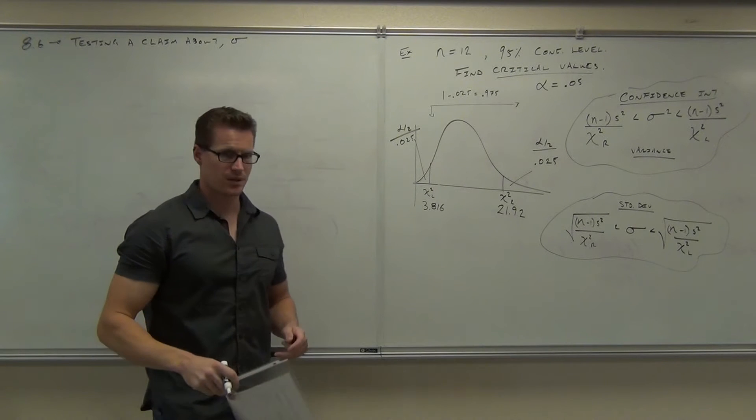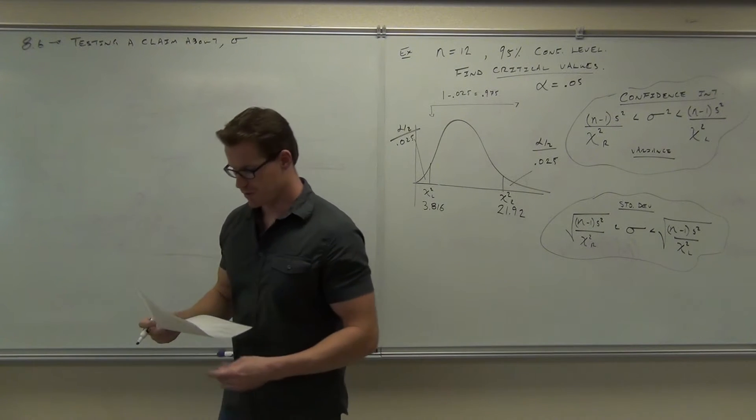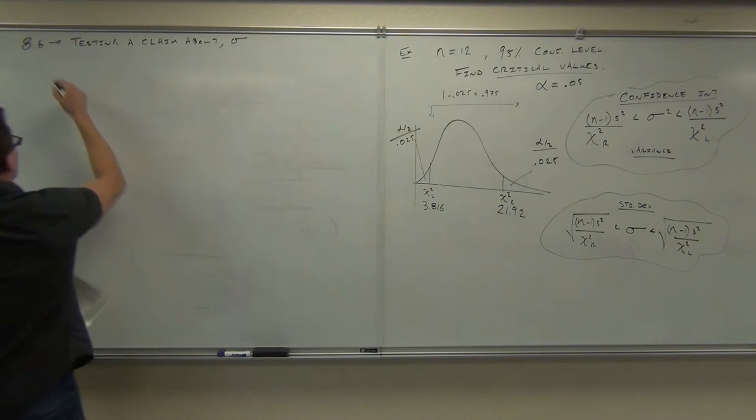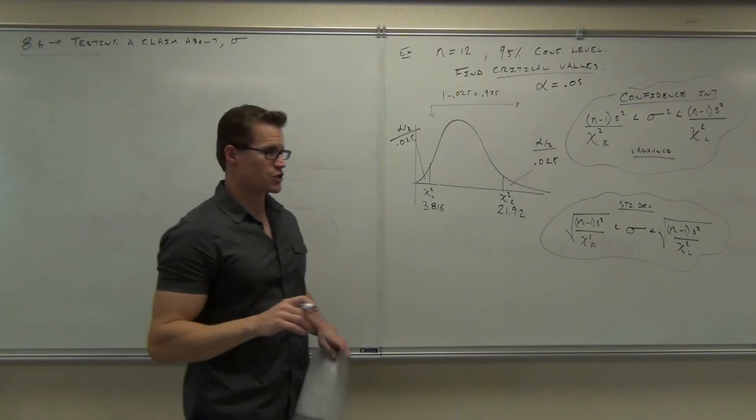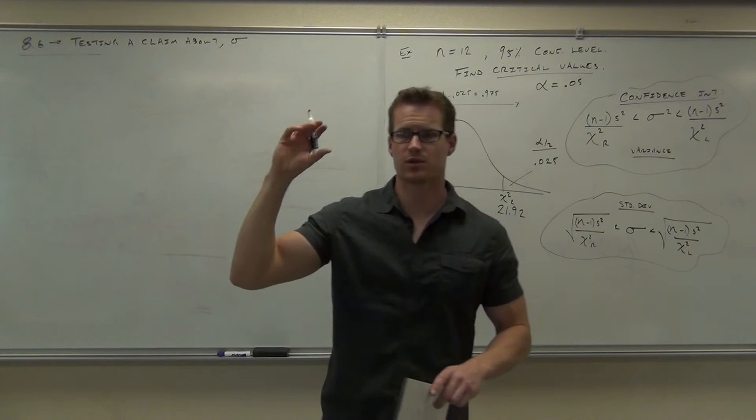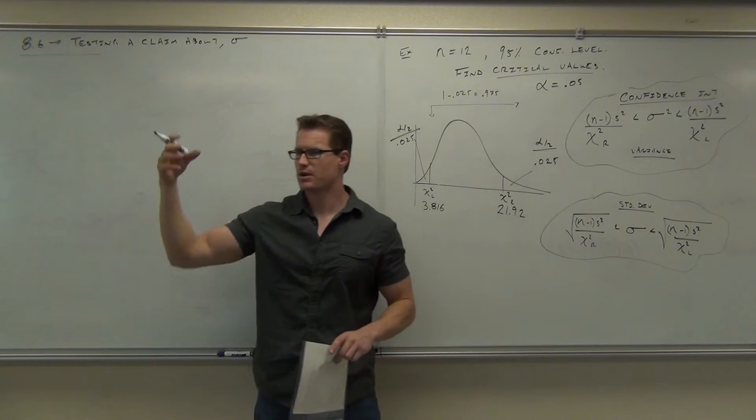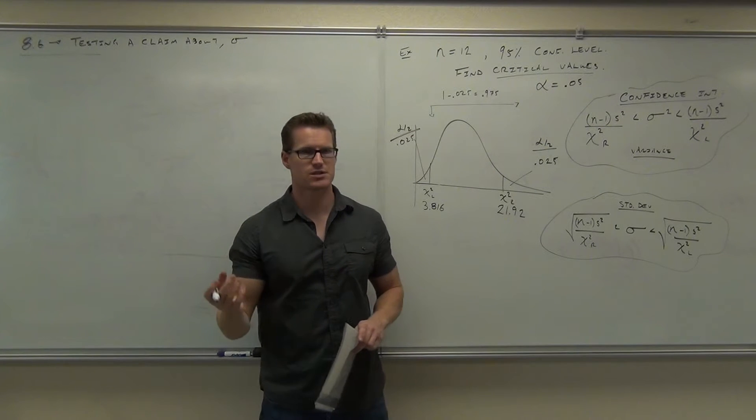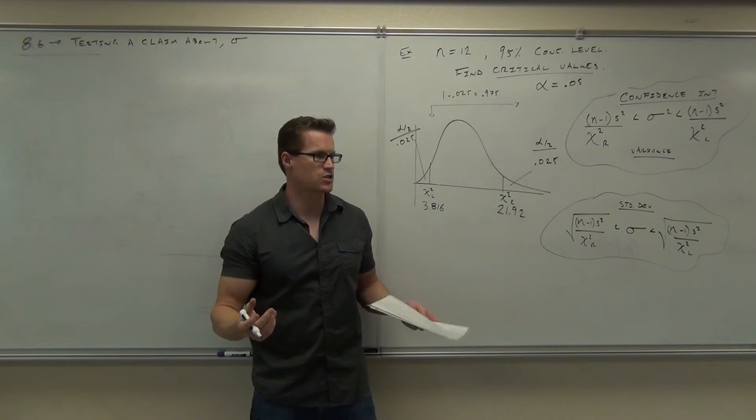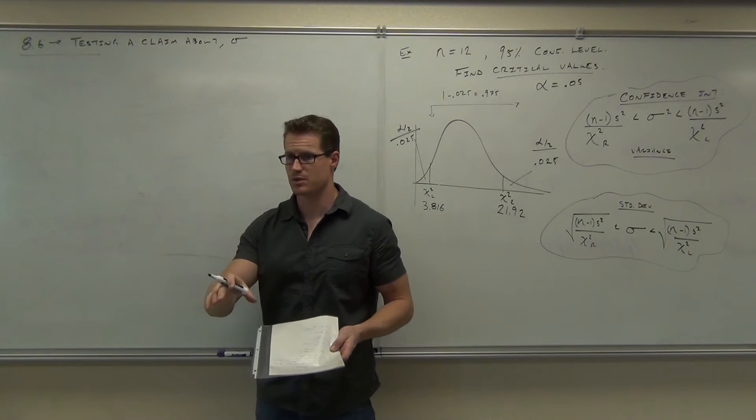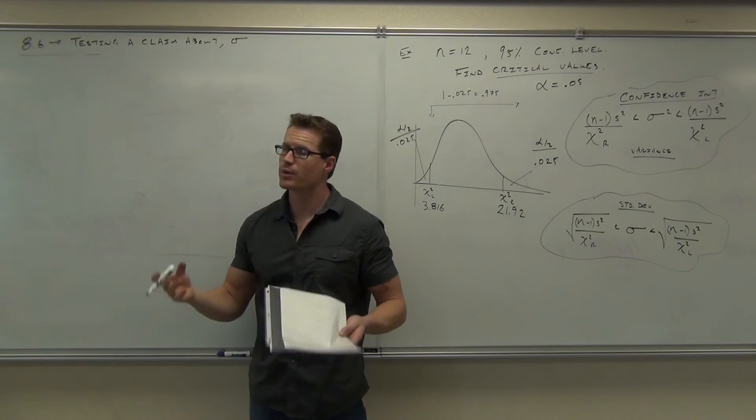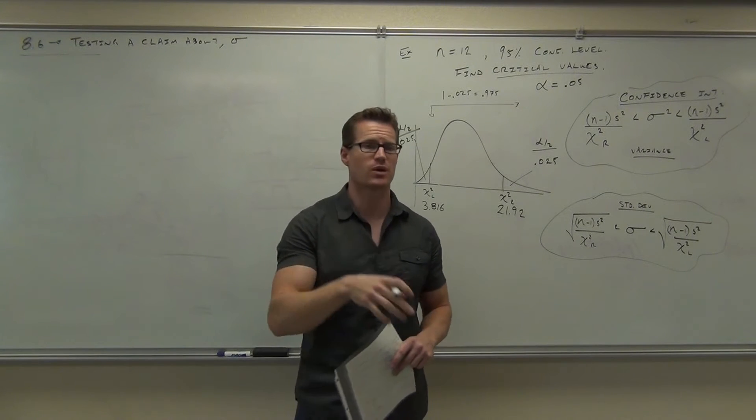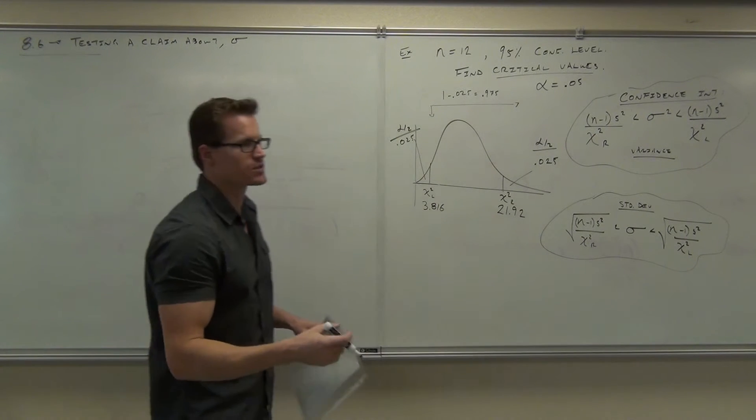Testing a claim about population standard deviation. Well, there's really only one thing we need to know. I've just told you the steps are the same. Step 1 is your claim, H of 0, H of 1. Step 3 is alpha, step 4 is your test statistic, step 5 is a picture, 6 is a decision, 7 is interpretation. The only difference is we have a different table. It's not a Z, not a T, it's a chi squared.